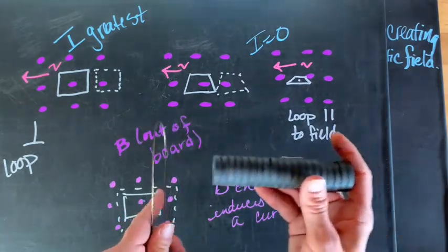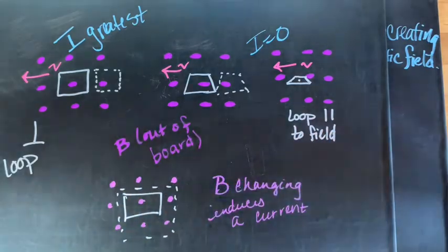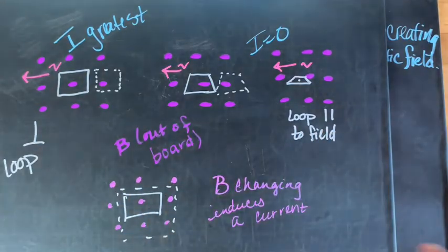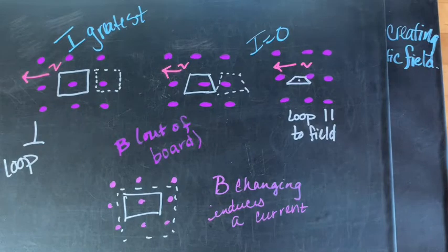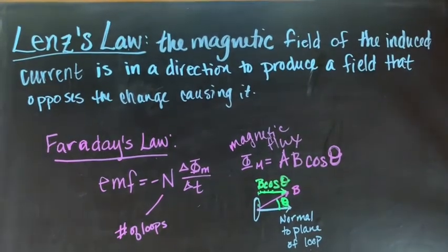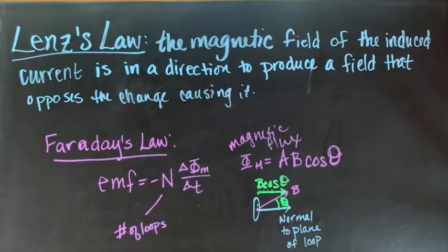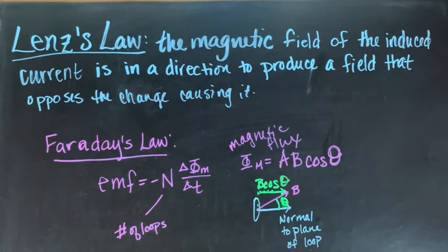If that current is exactly perpendicular to my loop, that's when I'm going to have my electric field be greatest. When we're looking at inducing a magnetic field or inducing a current from a magnetic field, what happens is that current also produces a field. So we have Lenz's law.